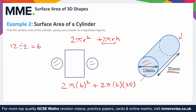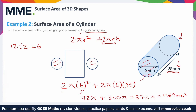Tidying this up: 6 squared is 36, times 2 is 72π, plus 6 times 25 is 150, times 2 is 300π. So it's 72π plus 300π, which is 372π. It doesn't ask you to leave the answer in terms of pi — it asks for four significant figures. Putting this in your calculator gives 1,169 millimetres squared. Make sure you use the units from the question, and don't forget the squared because it's a surface area, not a length.